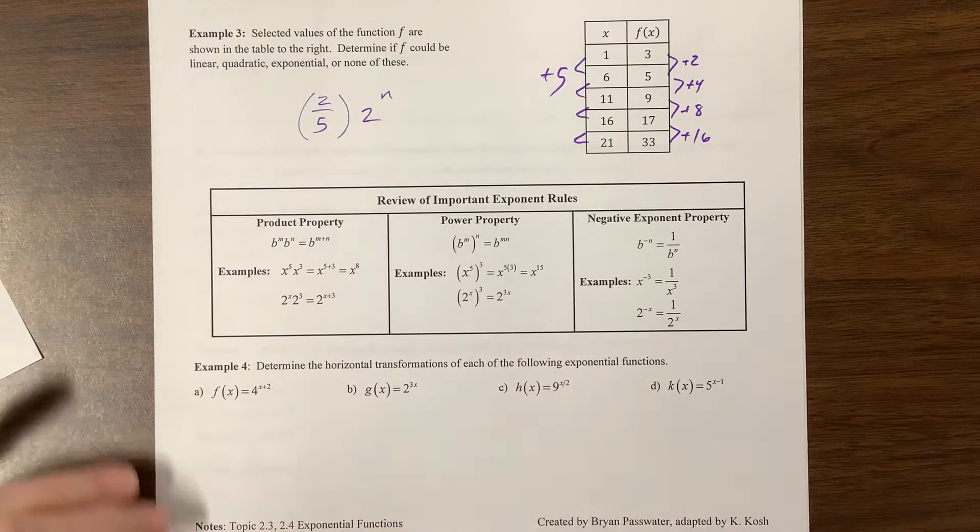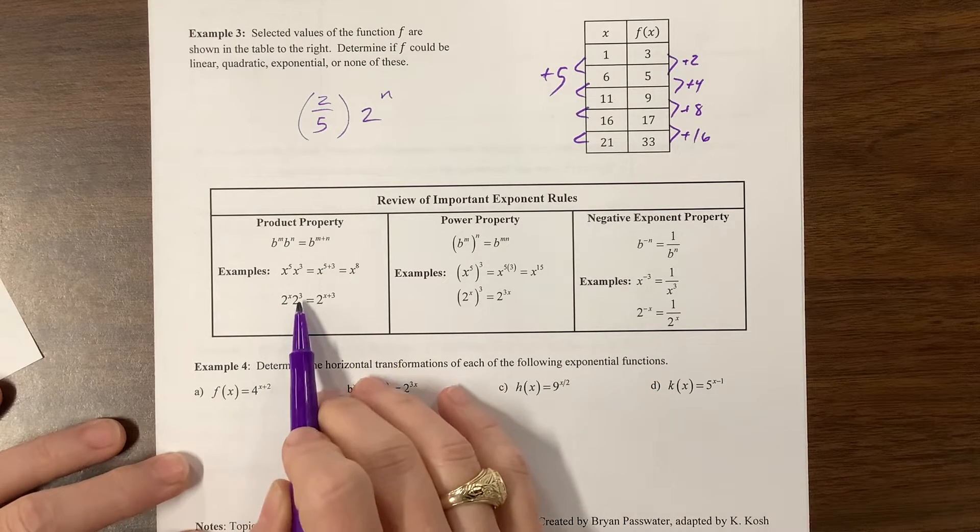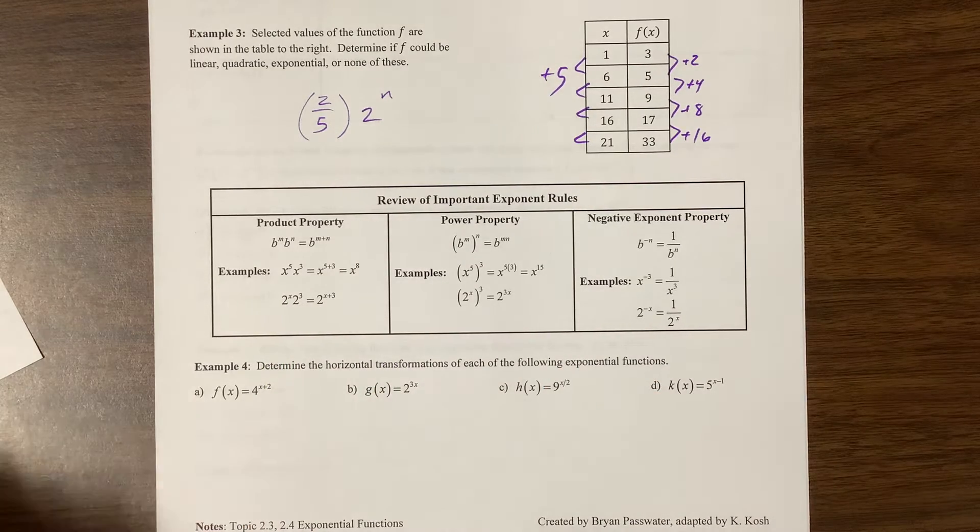Anyway, hopefully we know these properties. 2^x times 2^3 is going to be equal to 2^(x+3).